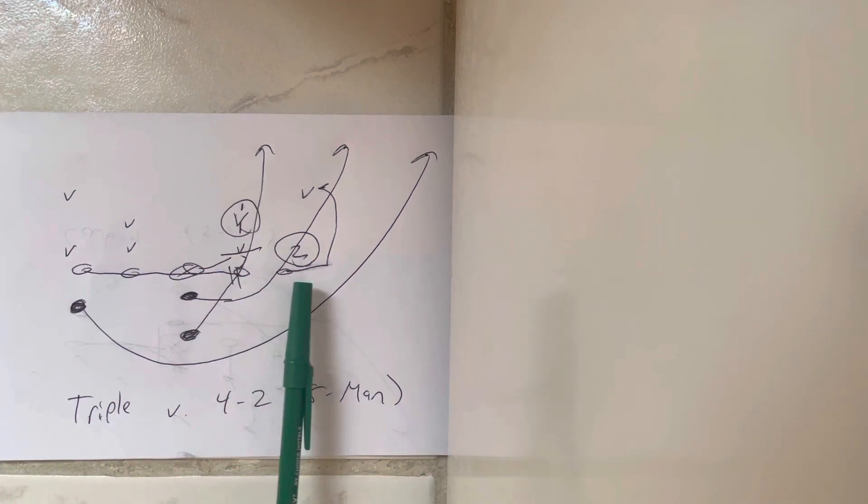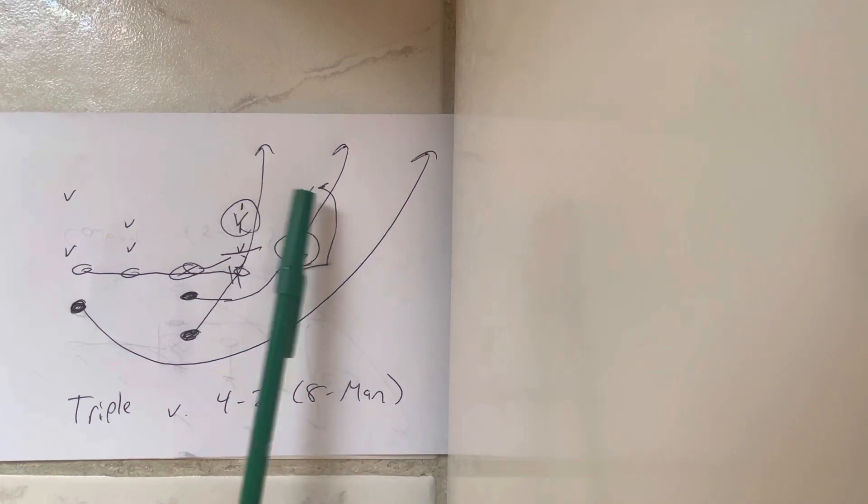The end's got to block number 3, so it's 1, 2, 3. So he's going to take 3 flat steps, step at 45 degrees, and get his left knee through the crotch to number 3, the run support player.